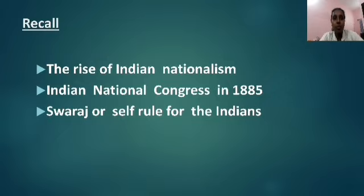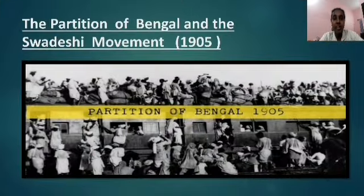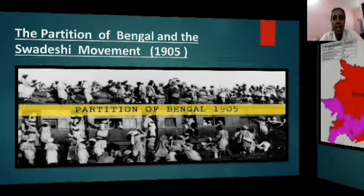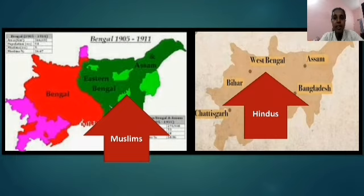Now let us move on with today's topic. Why did the British think of partitioning Bengal? To suppress the growing sense of nationalism and unity among the Indians, the British decided to divide the Indians on the basis of their religion. They divided the state of Bengal, which was the main center of the Nationalist Movement, into East Bengal for the Muslims and West Bengal for the Hindus.